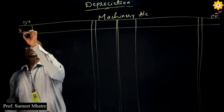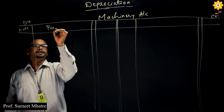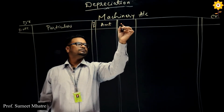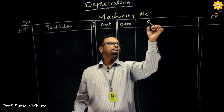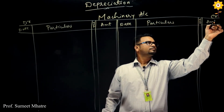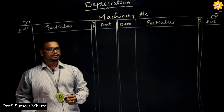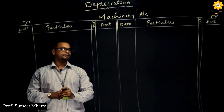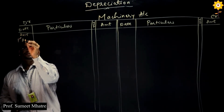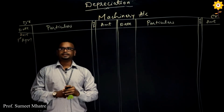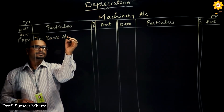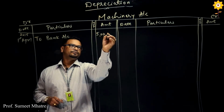This is the format which we prepare for the ledger. The columns are: date, particulars, journal folio, and amount. As per our question, machinery was purchased on 1st April 2015. So in the date column we write 1st April 2015. As it is purchased, it means bank — so we write 'To Bank Account'. The cost was 5 lakhs, so we write 5 lakhs.